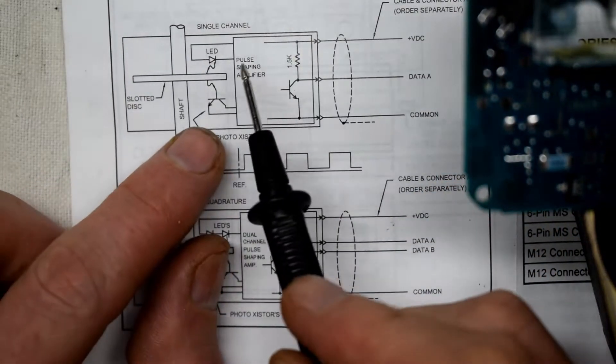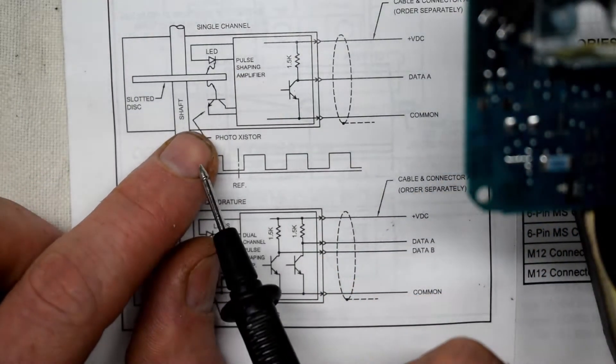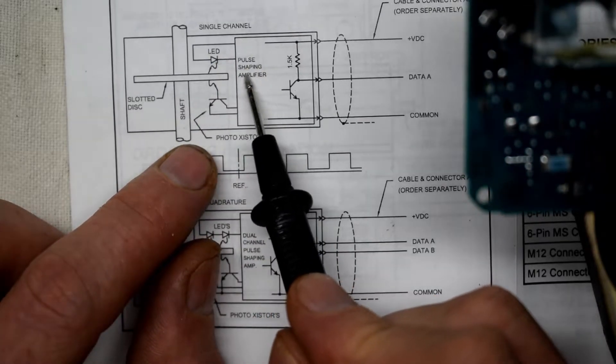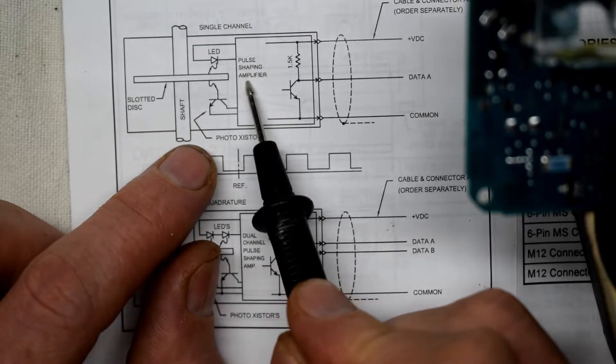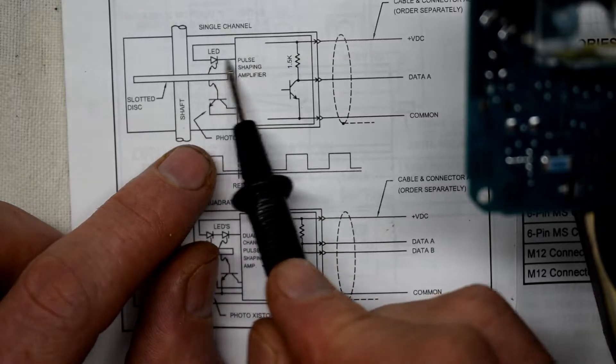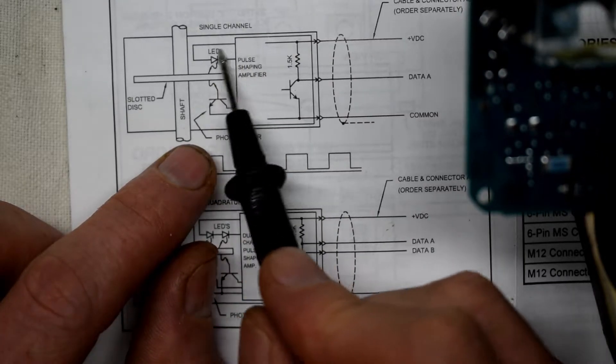And normally what blows is this LED right here. And then there's a pulse sampling amplifier. There's an N-channel MOSFET that blows in series with this LED. And you have to replace these two.